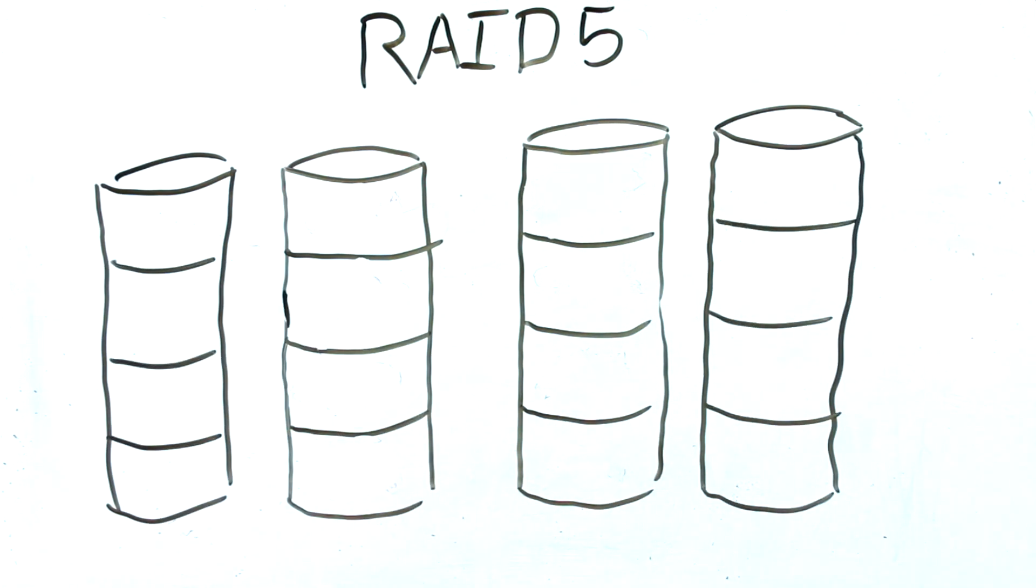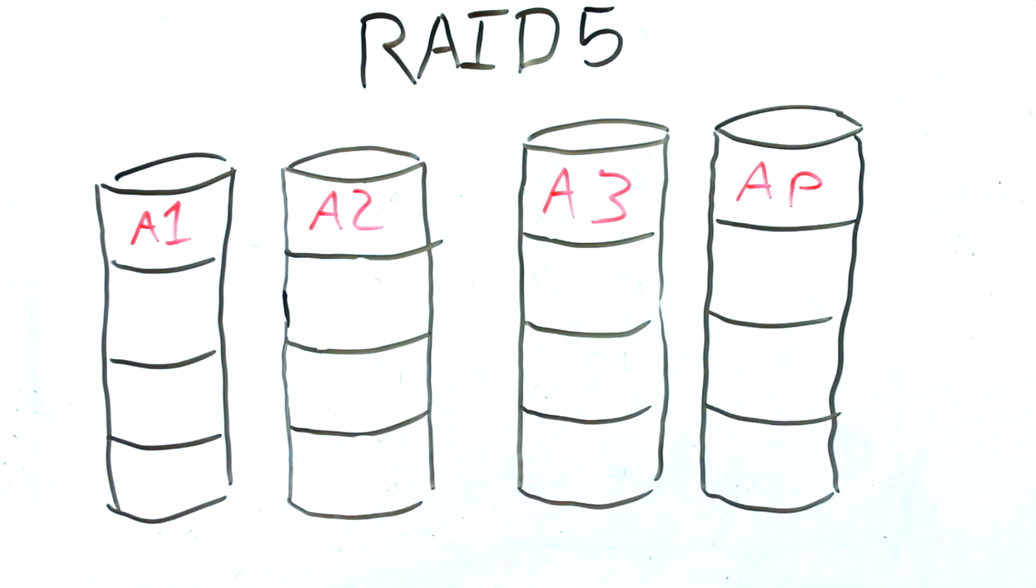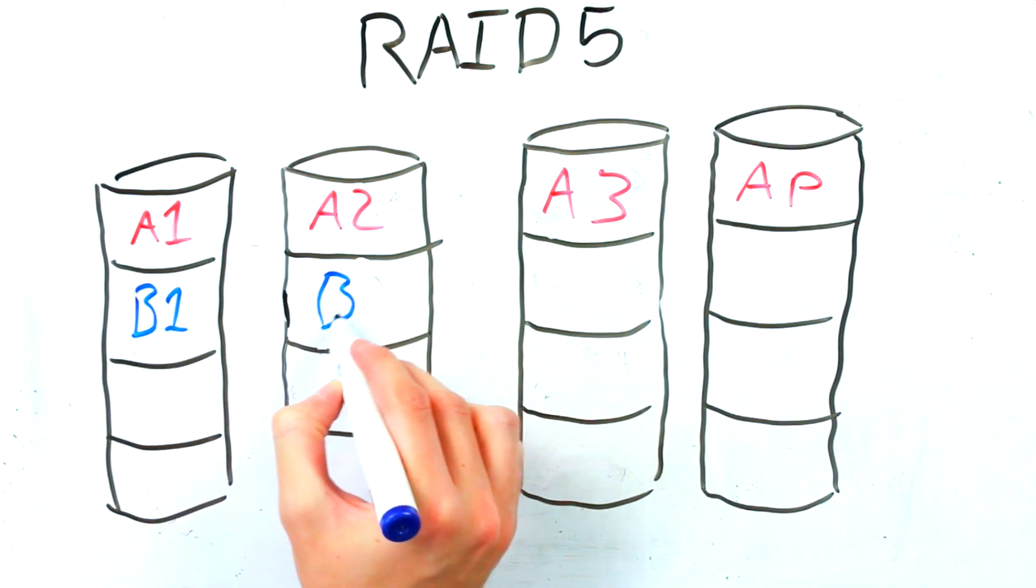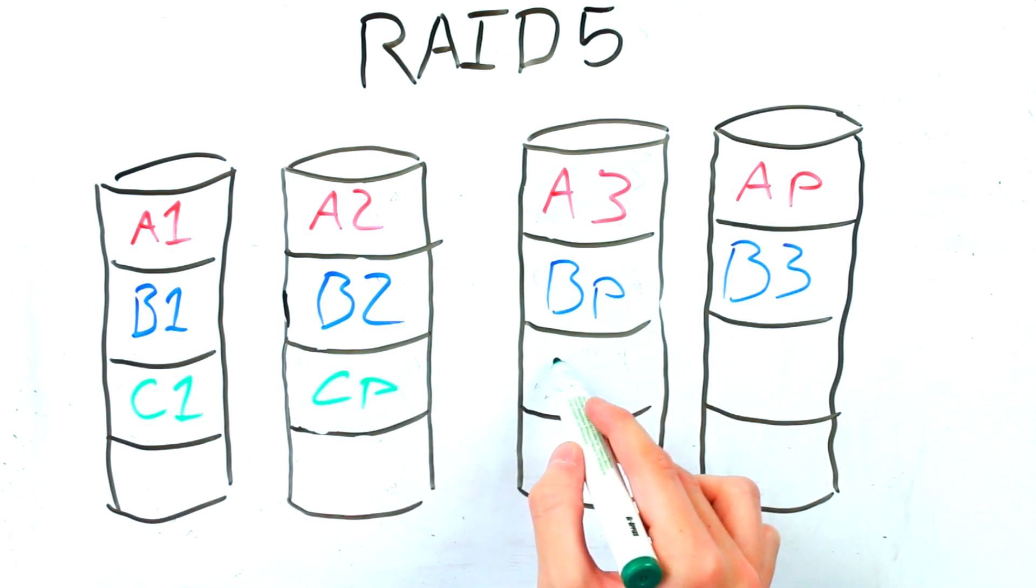Well take for example a NAS with four 4TB hard drives. When RAID 5 is activated it will start creating blocks of parity data. To quickly explain, blocks are the sectioned off areas of a disk where your data is stored. So for example here we have blocks A, B, C and D on each disk.